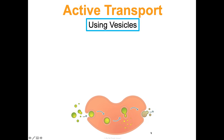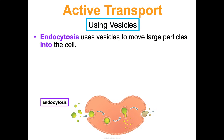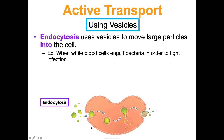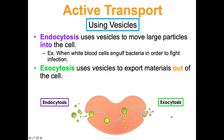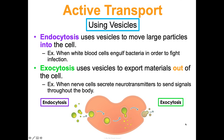The last examples of active transport require using vesicles — those little carts that move things around the cell. Endocytosis is when the cell uses vesicles to move large particles into the cell. For example, white blood cells take in bacteria and destroy them once inside the cell to fight infection — and this requires energy. Exocytosis uses vesicles to export things out of the cell, such as when a nerve cell secretes a neurotransmitter to send signals throughout the body.